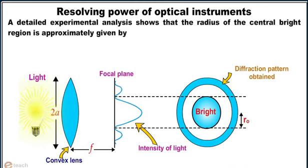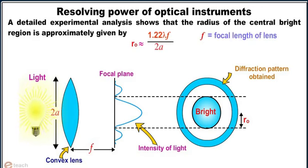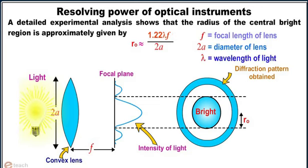A detailed experimental analysis shows that the radius of the central bright region is approximately given by r0 equals 1.22 lambda f by 2a, where f is the focal length of the lens, 2a is the diameter of the lens, and lambda is the wavelength of light.